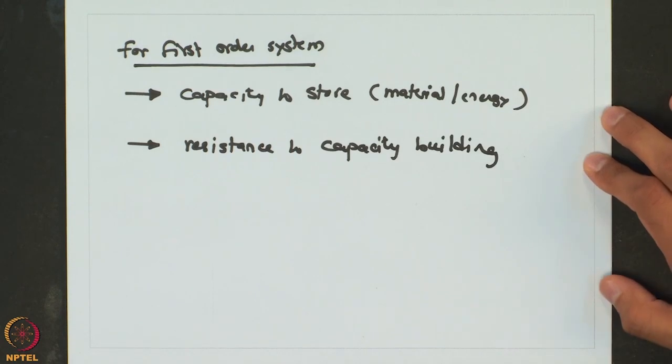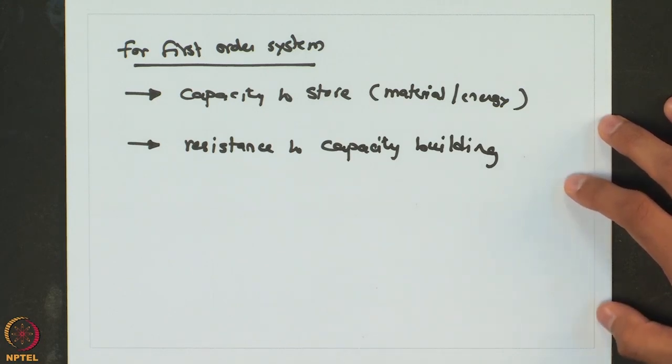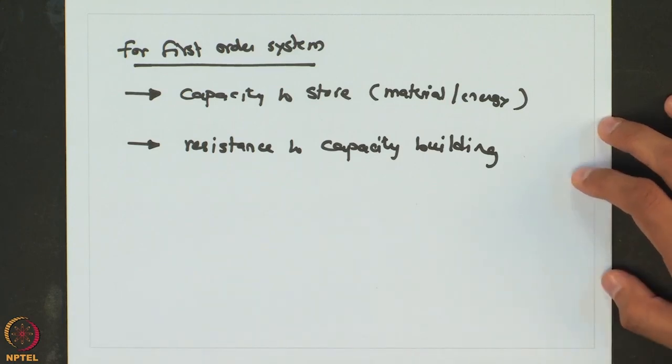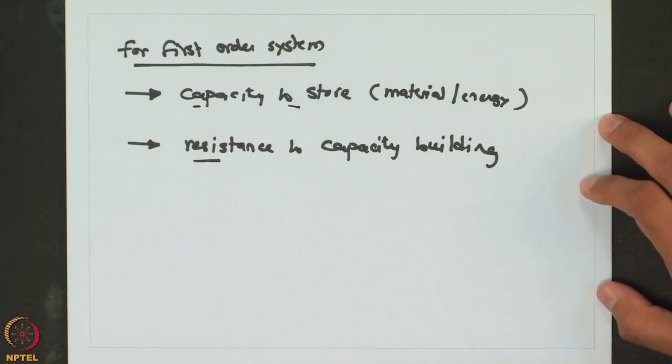So all examples two to five have two features for first-order systems: a capacity to store — which may be material or energy — and a resistance to capacity building. For the first example, which is a purely capacitive process also known as an integrator, the outlet flow rate was independent of height, so there was no resistance to capacity building. There was only a capacity to store, with no resistance, which is why these systems are known as purely capacitive systems or integrators. Thank you.